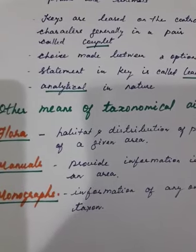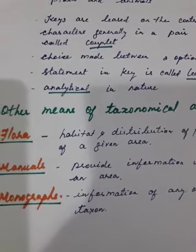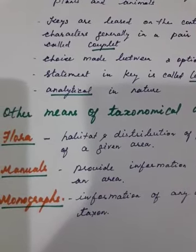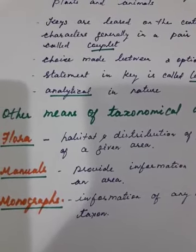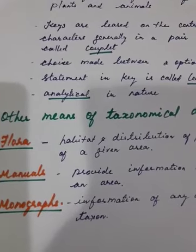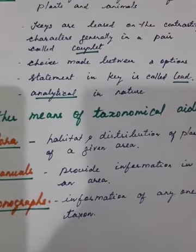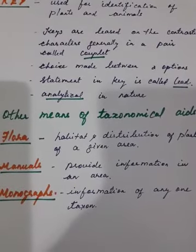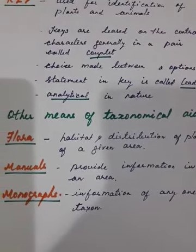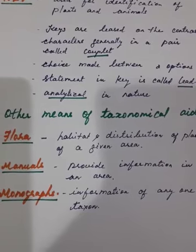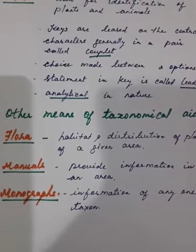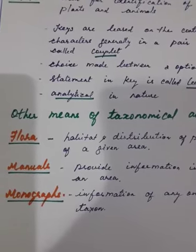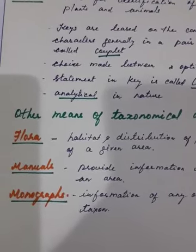Apart from these, catalogs are also used as taxonomical aids. We have now completed chapter 1, The Living World. Go through this video, and if you find any doubt you can WhatsApp or call me. Bye!